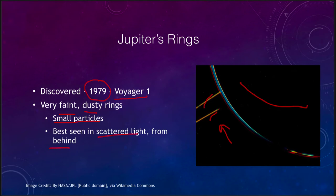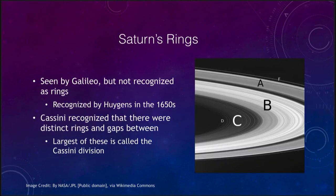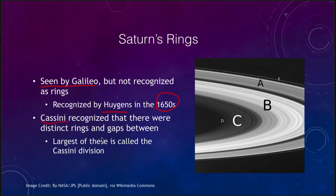What we really want to look at are the rings of Saturn, which have a lot more detail. They were actually seen by Galileo, but not recognized as rings — only as a blob on each side of the planet that sometimes disappeared. By the time telescopes got a little bigger, just a few decades later in the 1650s, Huygens was able to recognize them as a ring system. Around that time or a little later, Cassini recognized that there were distinct rings — not just a single ring — and gaps between them.